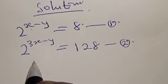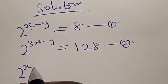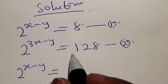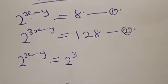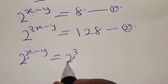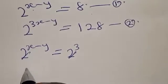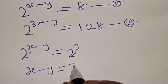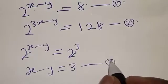From equation 1, we have 2 raised to power x minus y equal to 8, which can be expressed as 2 raised to power 3. Therefore, they have the same base — the bases cancel. We have x minus y is equal to 3. Let's call this equation 3.